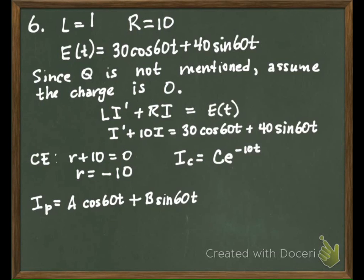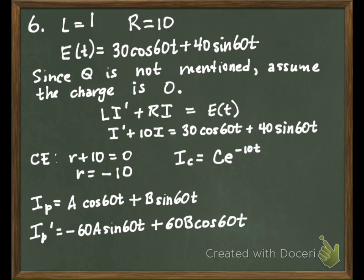What's our first derivative? Negative 60A sine 60t plus 60B cosine 60t. And we're going to put those back into our original equation: I' + 10I = E(t).